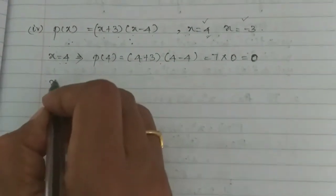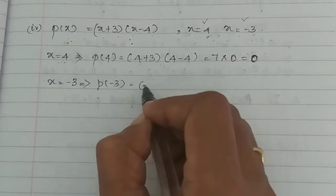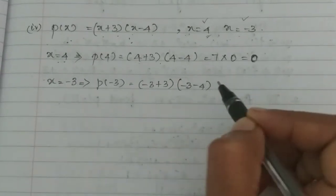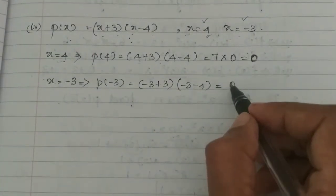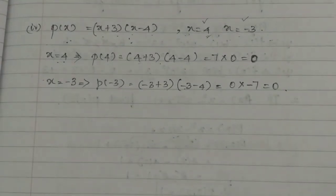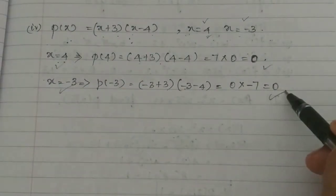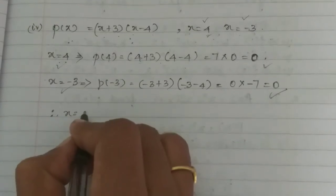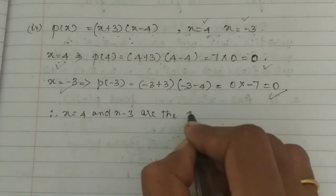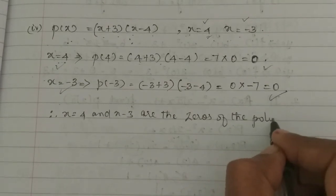Then for x equal to minus 3: p of minus 3 is equal to minus 3 plus 3 into minus 3 minus 4. Minus 3 plus 3 gives 0, and 0 into minus 7 equals 0. Therefore x equal to 4 and x equal to minus 3 are the zeros of the polynomial p of x.